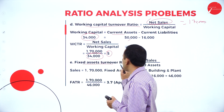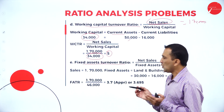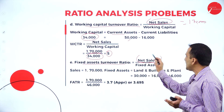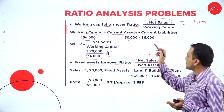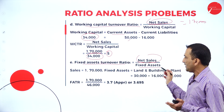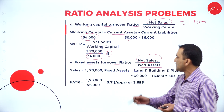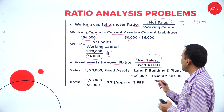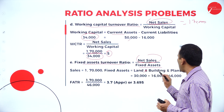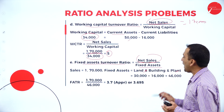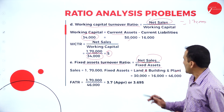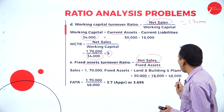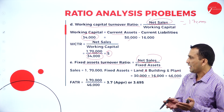Moving to fixed asset turnover ratio. The formula is net sales divided by fixed assets. Net sales is 1,70,000. Fixed assets in the balance sheet on the asset side: land and building and plant value — two items given. Taking them together, total is 46,000.